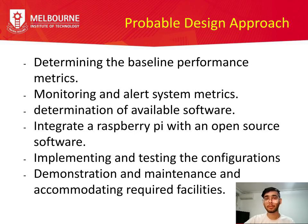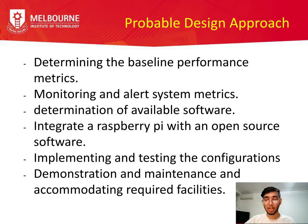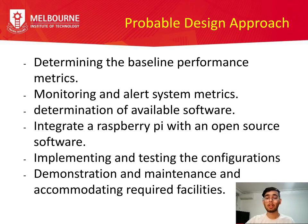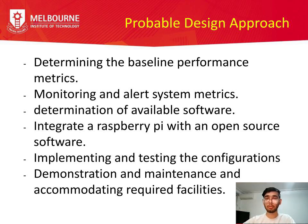The probable design approach consists of key steps. We've completed research and identified the problem domain. The next steps are: determining baseline performance metrics for what the monitoring and alert system will do — such as sending SMS and performing actions based on predefined commands; determining available software based on those metrics; integrating the software with Raspberry Pi; implementing and testing configurations; demonstrating to the client; and performing maintenance accordingly.